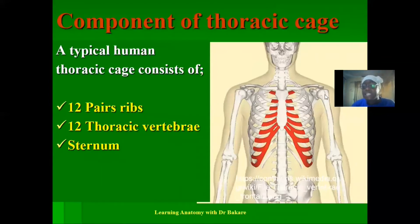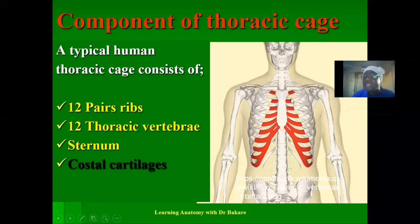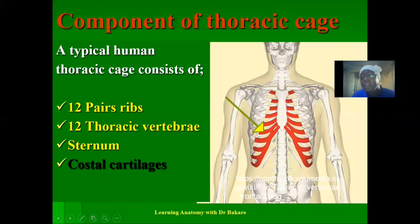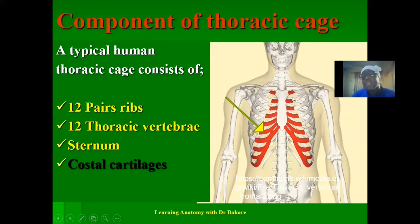Going further, we have the costal cartilages. The costal cartilages are seen in the anterior part of the thoracic cage and replace the ribs in that region. The ribs extend from the thoracic vertebra posteriorly and span through to be connected to the sternum anteriorly, but they do not have a direct connection; they are replaced by the costal cartilages, which are highlighted in red. It is the costal cartilages that finally connect to the sternum, allowing for the expansion and contraction of the thoracic cage to aid respiratory processes.